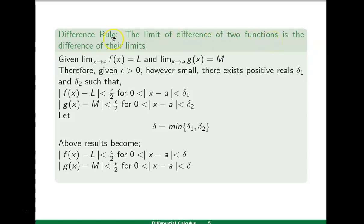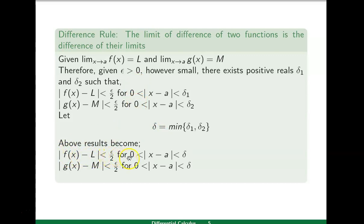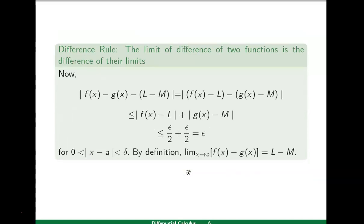Next is the difference rule. We want to prove that the limit of the difference of two functions is the difference of their limits. Using the epsilon-delta definition for limit of f(x) we choose delta-one, and for limit of g(x) we choose delta-two. Defining delta as the minimum of delta-one and delta-two, we rewrite: |f(x)−l| less than epsilon/2 and |g(x)−m| less than epsilon/2, both for zero less than |x−a| less than delta.